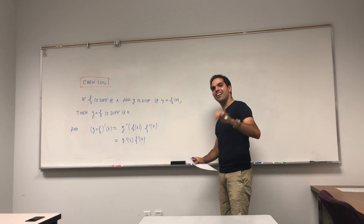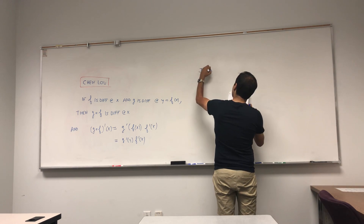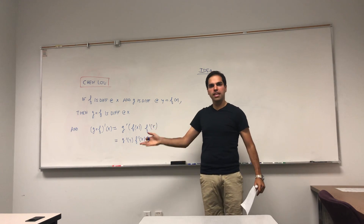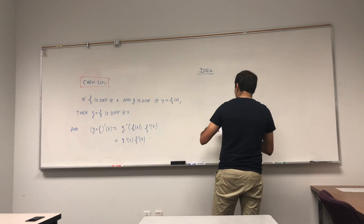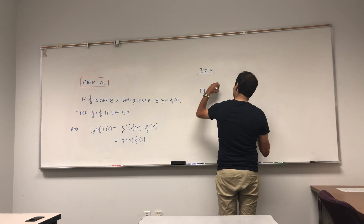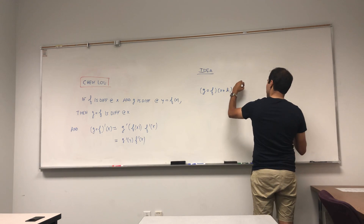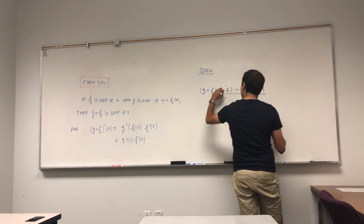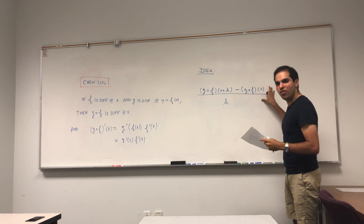First let me give you a sort of wrong proof, and I'll tell you how to remedy it. So here's the idea — remember what the derivative is: it's just a limit of difference quotients. Let's start with the difference quotient of g composed with f — so the stuff we're going to take a limit of — and calculate g composed with f of x plus h, minus g composed with f of x, divided by h.